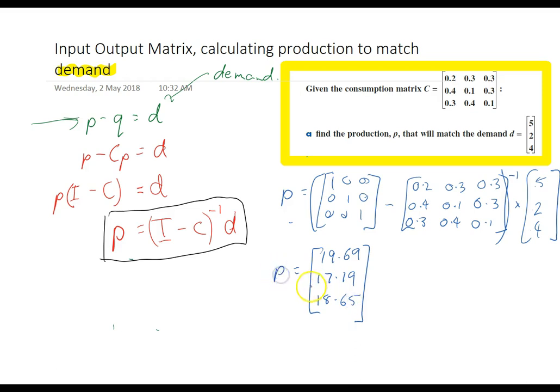Now, you should write that in a sentence 19.69, 17.19, 18.65. But it's important to understand what you've calculated. There's a consumption matrix. We've been asked to provide for an external source to our economy. Now, in order to meet the external demands 5, 2, 4 which is P minus Q we need to create a P of 19.69, 17.19 and 18.65.